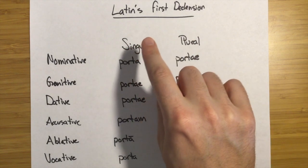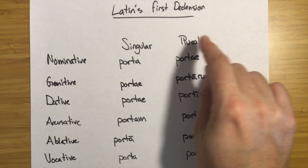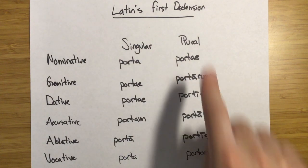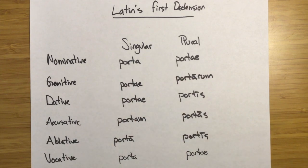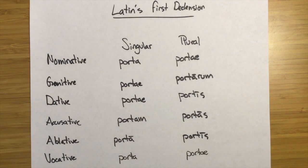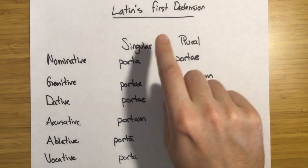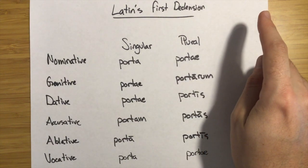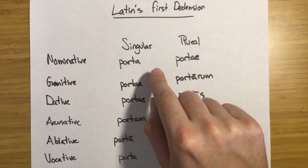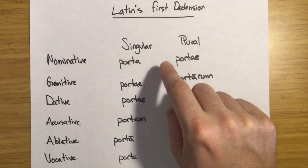Every combination of singular and plural and all the cases has its own form that we use when that case is necessary grammatically and when that number is semantically necessary — so when we're talking about singular or plural items. I'm just going to run through these forms really quickly with the word porta, which means door, as an example.